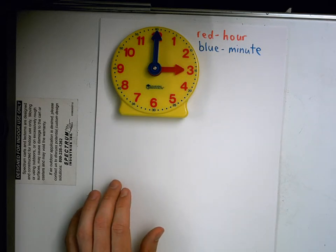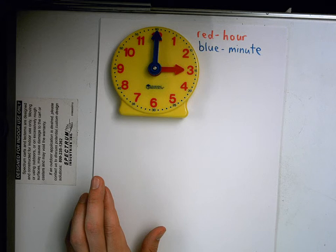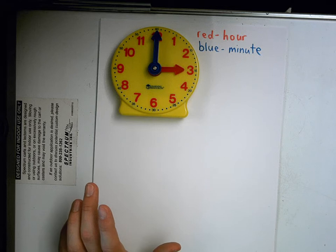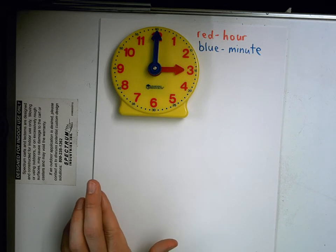Now you guys have probably heard three o'clock or eight o'clock or seven o'clock. I eat dinner at seven o'clock. My baseball game is at six o'clock tonight. The first number we hear in our time is always the hour.